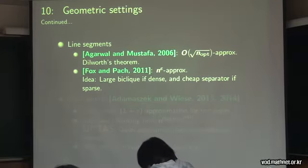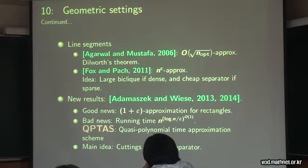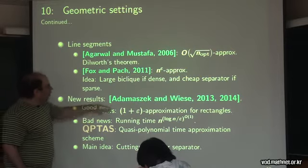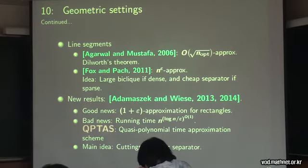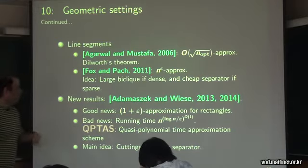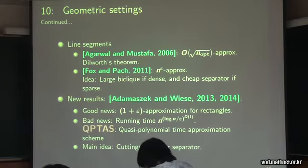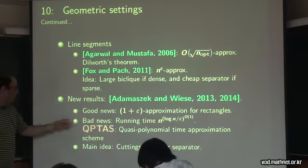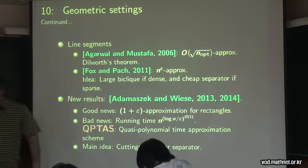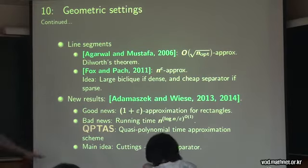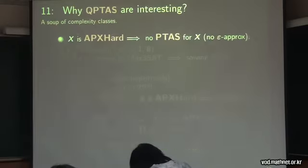For line segments, Pankaj Agarwal and Abil Mustapha showed a square-root-opt approximation using Dilworth's theorem. Fox and Park get an n-to-the-epsilon approximation for every epsilon, by carefully balancing based on how sparse or dense the graph is. Most relevant to this work is Adamczyk and Weiss — a SODA paper with a follow-up — showing a 1 plus epsilon approximation. The first paper worked for axis-parallel rectangles, the second for polygons with up to a polylogarithmic number of edges, but the running time was quasi-polynomial. The main idea was cuttings and planar separators.